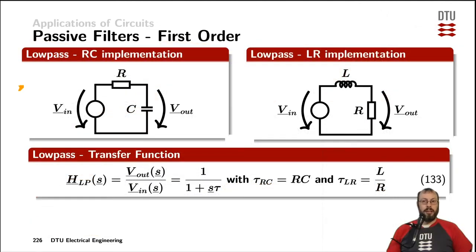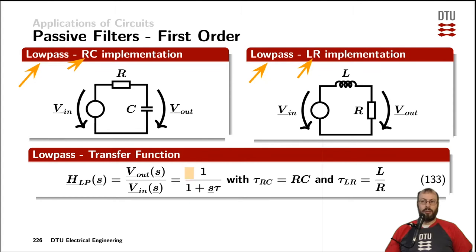A low-pass is one of the two filter characteristics for a passive first-order filter. It can be implemented either with a resistor and a capacitor, as shown on the left-hand side, or with an inductor and a resistor, as shown on the right-hand side. The transfer function is the same in both cases, but the characteristic time constant is either R times C for the RC circuit, or inductance divided by resistance for the RL circuit.